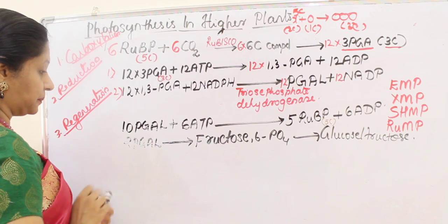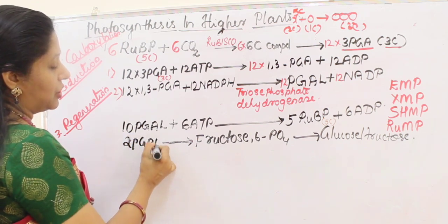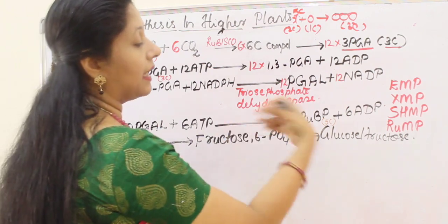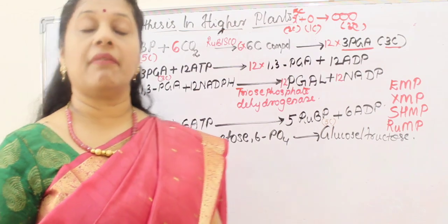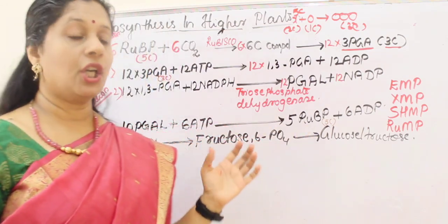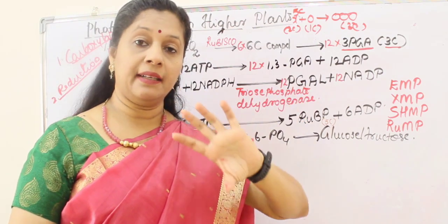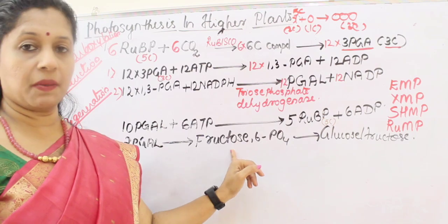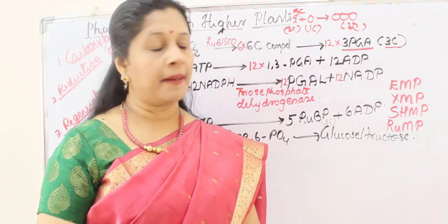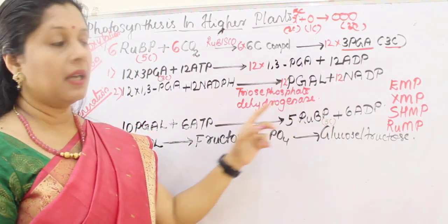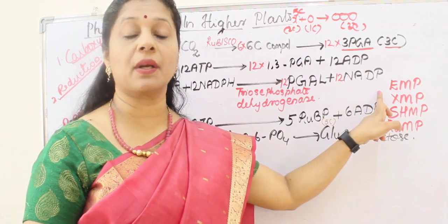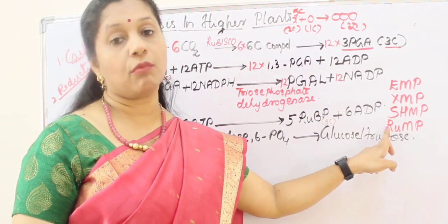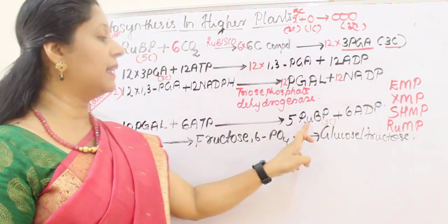The remaining 2 PGAL are converted into fructose-6-phosphate, a 6-carbon compound, which then becomes glucose or fructose — the final product of photosynthesis. The regeneration pathway involves several intermediate compounds, including erythrose monophosphate (EMP), xylulose monophosphate (XMP), sedoheptulose monophosphate (SHMP), and ribulose monophosphate, before finally becoming RUBP.